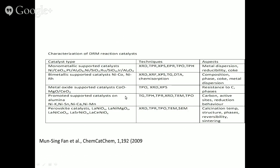For promoted supported catalysts on alumina — nickel promoted by potassium, tin, calcium, or manganese on an alumina support — TG, temperature-programmed reduction, XRD, TEM, and TPO are used. Coke formation, active sites, and reduction behavior are studied. A variety of perovskite catalysts have also been used: lanthanum nickelate, lanthanum nickel magnesium oxide, lanthanum nickel cobalt oxide, lanthanum strontium nickel oxide, lanthanum cerium nickel oxide. XRD, TPR, TPO, TEM, and SEM have been used. Aspects studied include calcination temperature, structure retention, phase identity with initial perovskite phase, reversibility, and sintering.